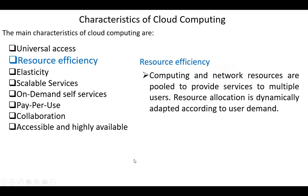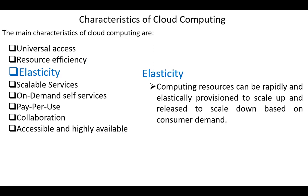Regarding resource efficiency, computing and network resources are put to provide services to multiple users. Resource allocation is dynamically adapted according to user demand. Next, elasticity. Computing resources can be rapidly and elastically provisioned to scale up and released to scale down based on consumer demand.